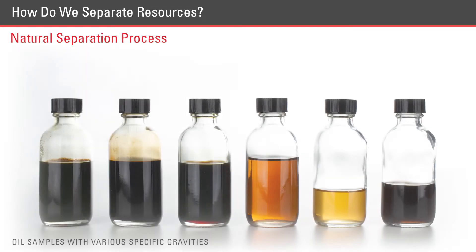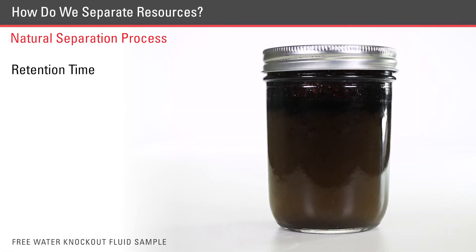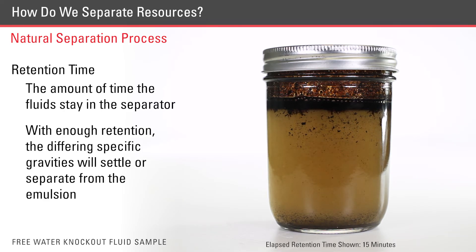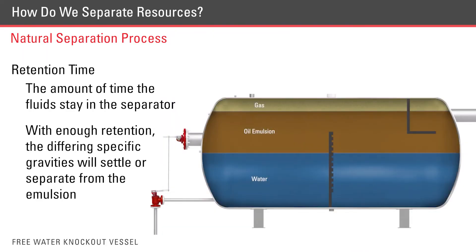Nature helps us in the separation process. Often, the differences in specific gravity of a resource are all that is needed to facilitate separation, but they need enough time and a steady state to do so. Retention time is a big factor in the separation process — it is the amount of time that a fluid stays in the separator. With enough retention, the different specific gravities will settle or separate from the emulsion. As you can see in this example, over time the fluids separate as they move from the inlet side to the outlet.